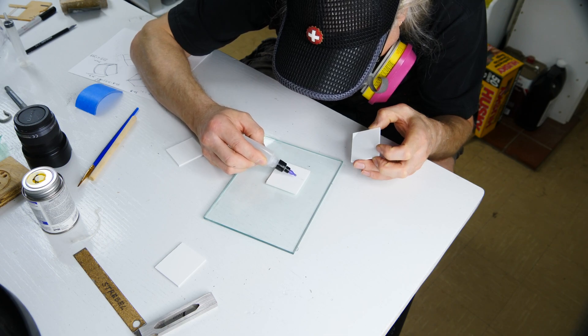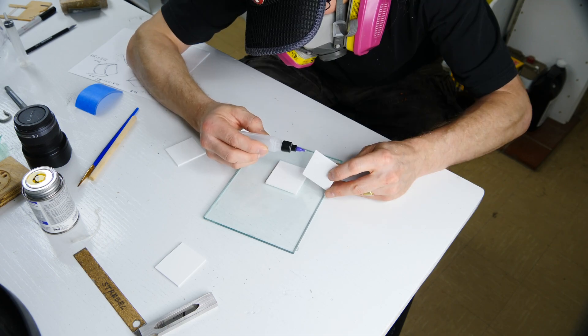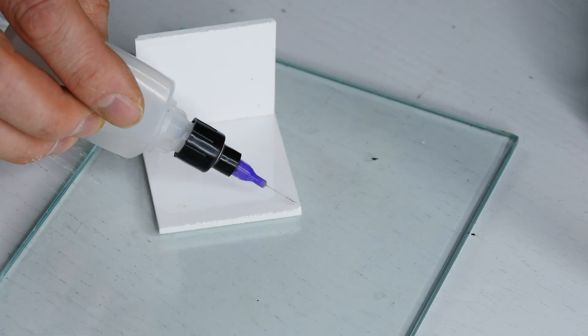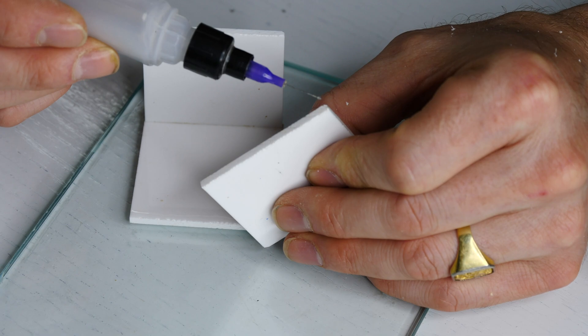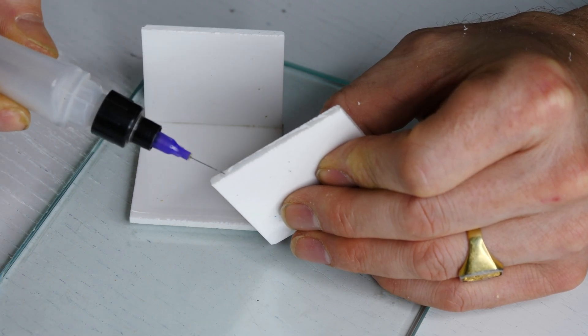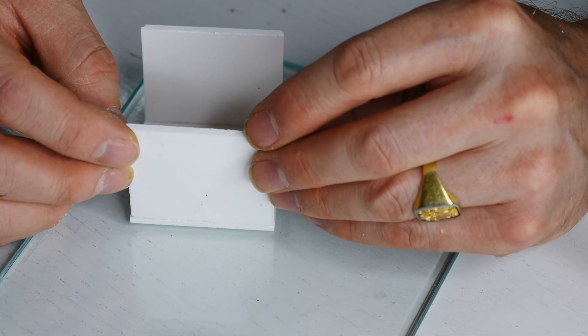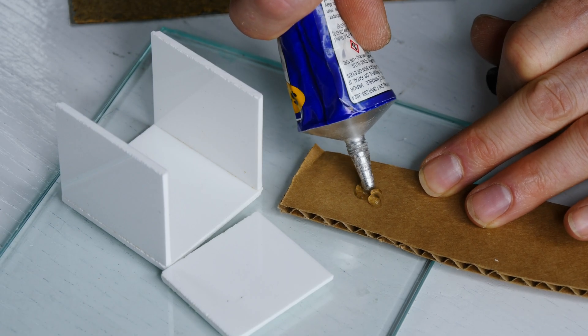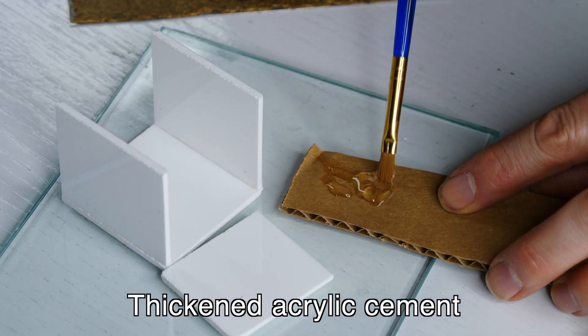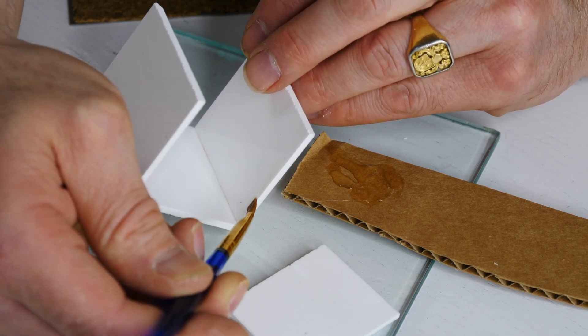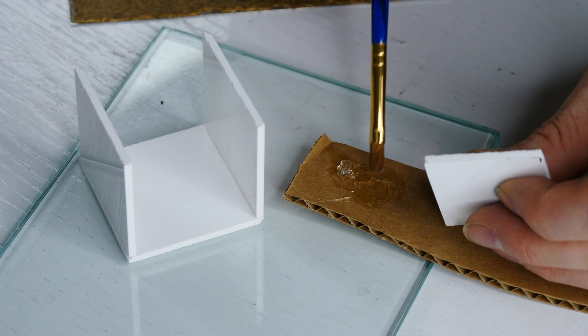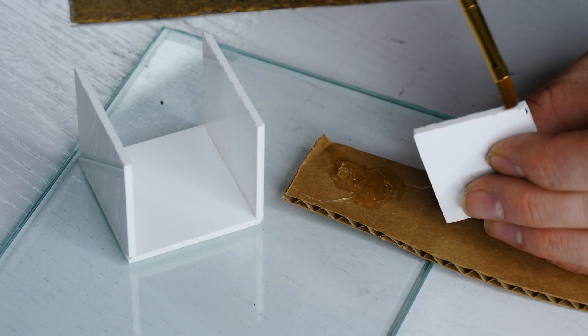Now that all the parts are cut for the rest of the cube, I'm gonna solvent weld it all together with dichloromethane. You can learn more about that from the previous video, acrylic basics. If you haven't seen that already, you should wear the proper organic vapor mask and safety gear when you're using dichloromethane as it's not particularly good when you inhale it or get it on your skin.